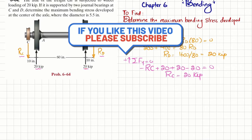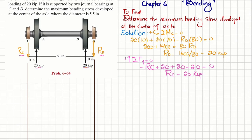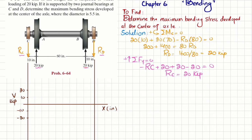With RC and RD known, we can draw the shear force and bending moment diagram to find the maximum bending moment at the center. On the shear force diagram, the horizontal axis shows length in inches and the vertical axis shows shear force in kips, with each division representing 10 kips. At point C, RC is downward (−20 kips), so the first point is at −20.